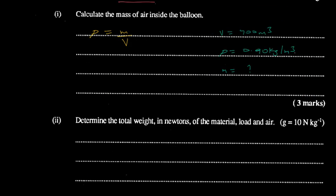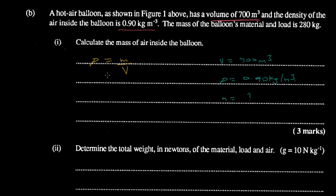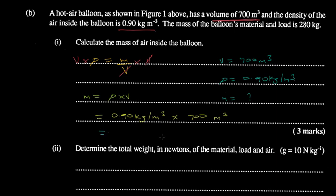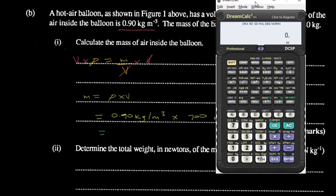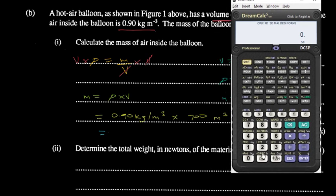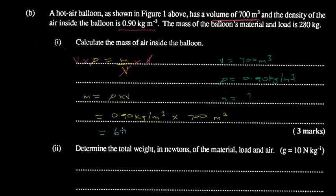Rearranging the formula — density equals mass over volume — we get mass equals density times volume. Substituting: mass = 0.90 kg/m³ × 700 m³. Using the calculator: 0.9 × 700 gives us 630 kilograms.